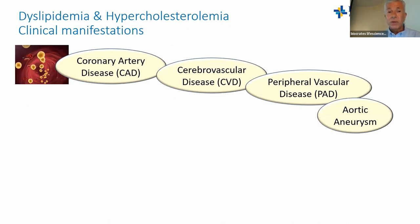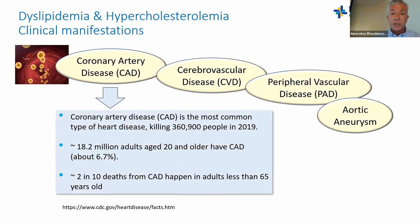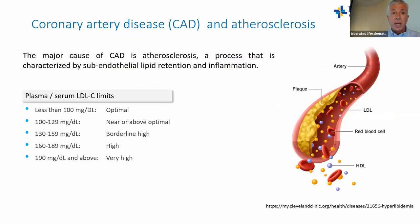The clinical manifestations of dyslipidemia and hypercholesterolemia are well established: coronary artery disease, cerebrovascular disease, peripheral vascular disease, and aortic aneurysm. Coronary artery disease is the most common — it's killing over 360,000 people in the U.S., with 18.2 million adults over 20 affected, and two in ten deaths occurring in adults under 65.